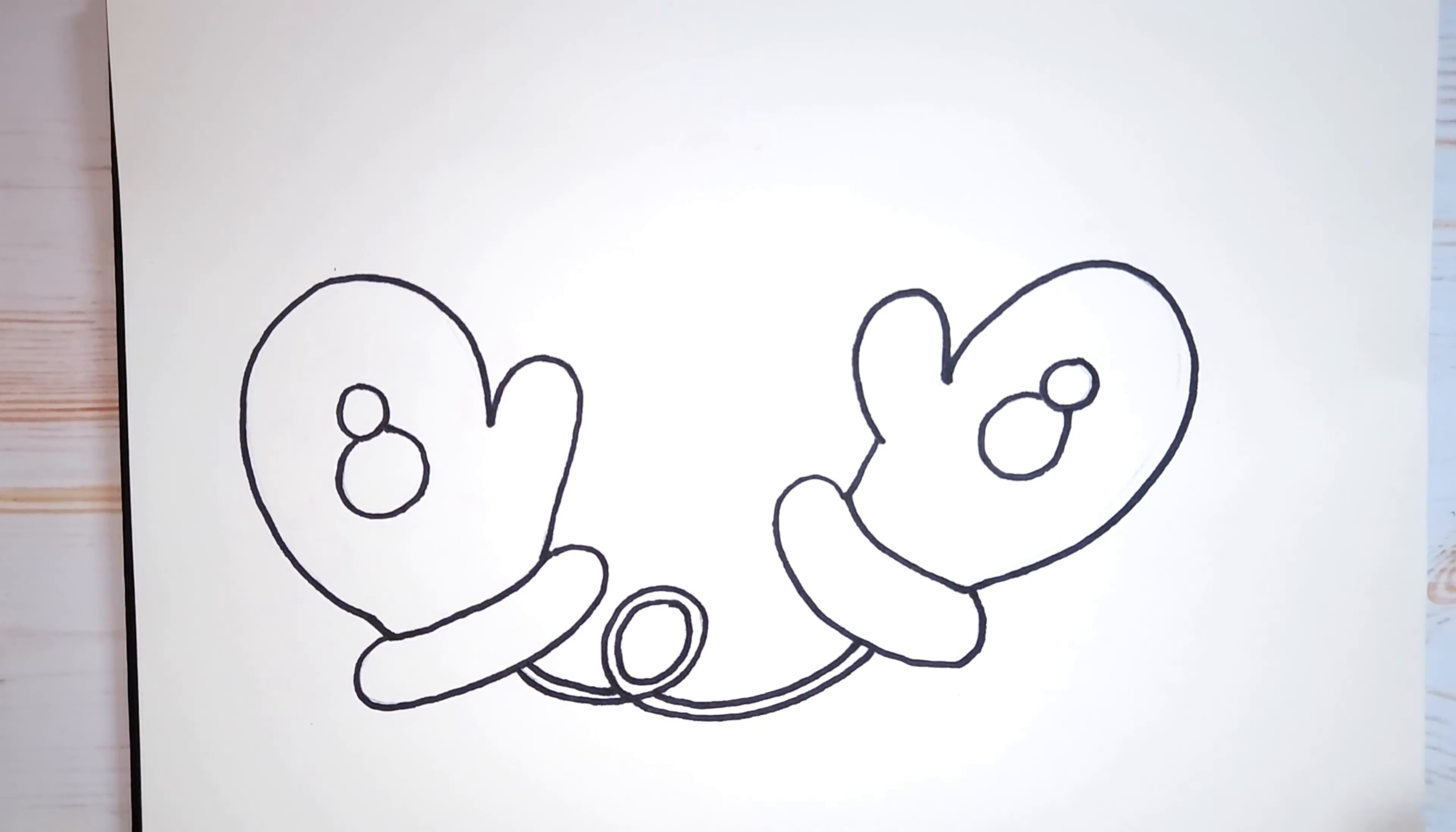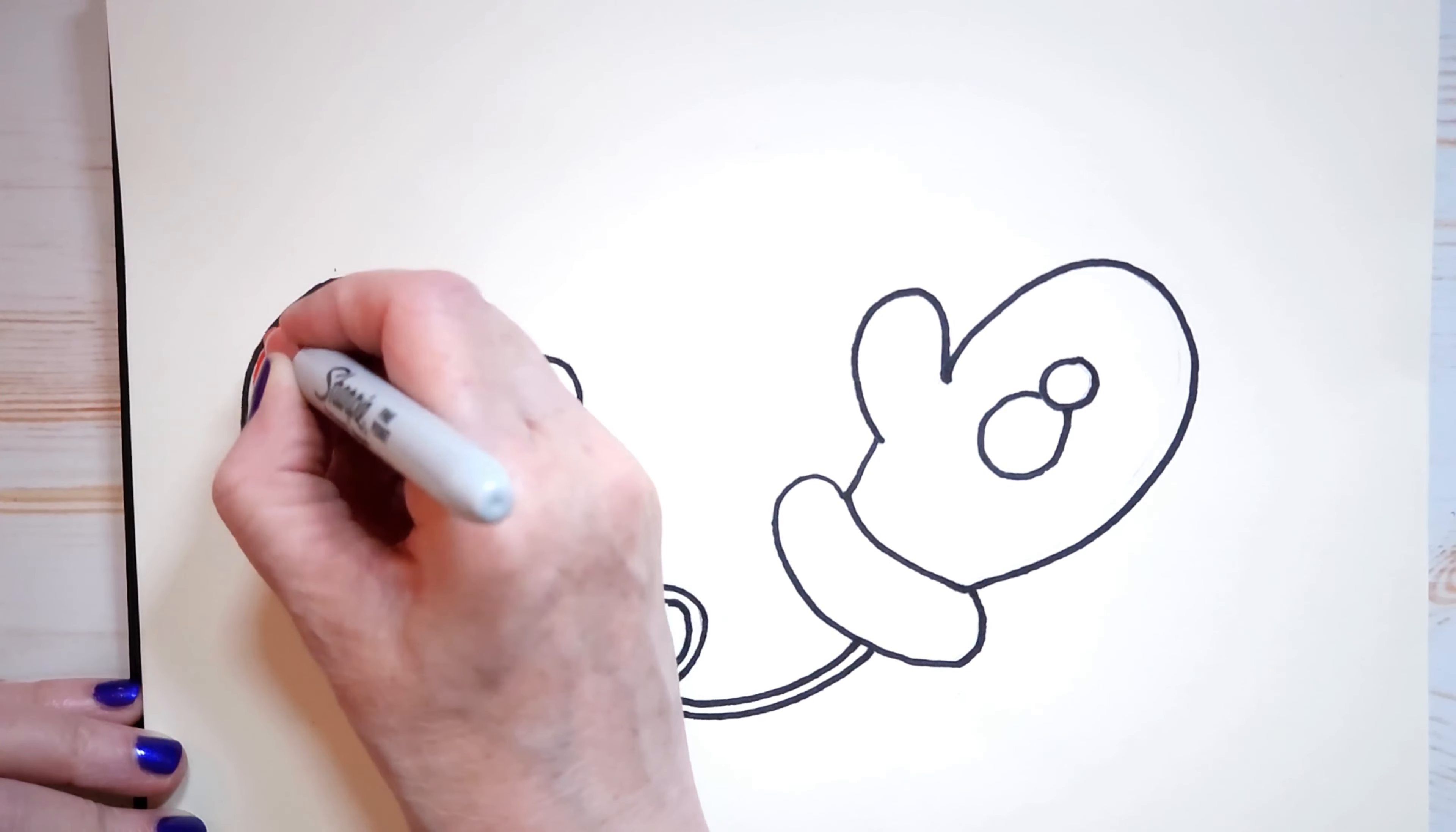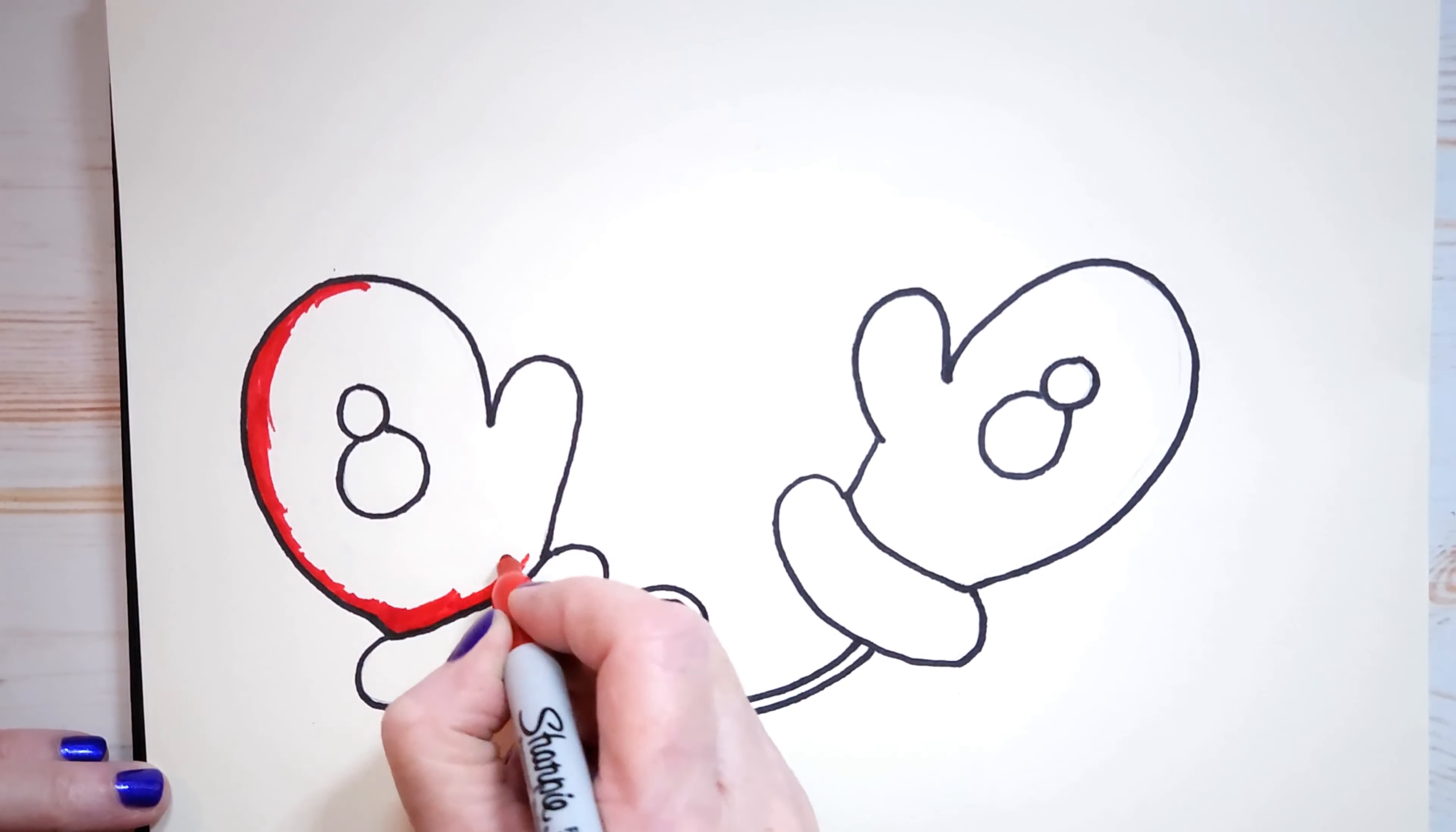I'm going to take my red and I'm coloring in the mitten, this mitten, and the string. Not this area, not this area, and not the snowman. So why don't I start? This is how I do it. I want to make sure I don't go outside of my lines. So I always do it this way. Just sort of do an outline first. And then I color it all in. It gives me, it guides me not to go outside the lines.